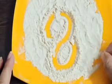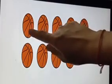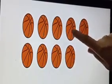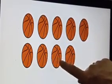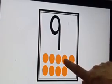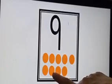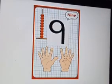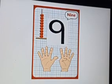Next number, this is number 9. This is number 9. Let's count the objects. Oh, how many basketballs? Let's count together. 1, 2, 3, 4, 5, 6, 7, 8, 9. Let's count number of dots. 1, 2, 3, 4, 5, 6, 7, 8, 9. Number 9.